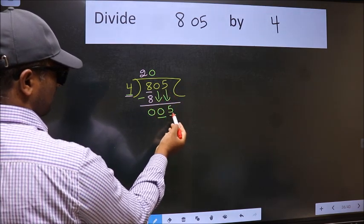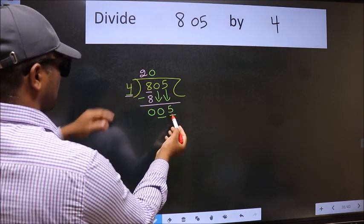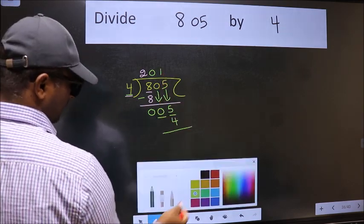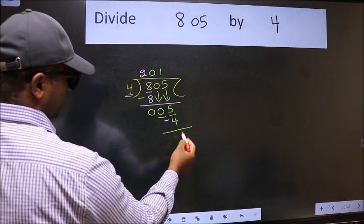Now 5. A number close to 5 in the 4 table is 4 ones, 4. Now we should subtract. We get 1.